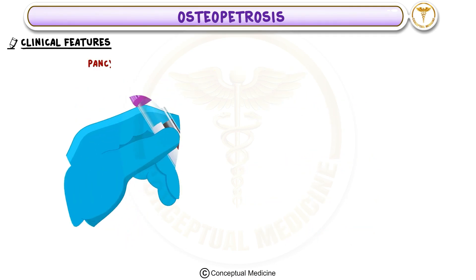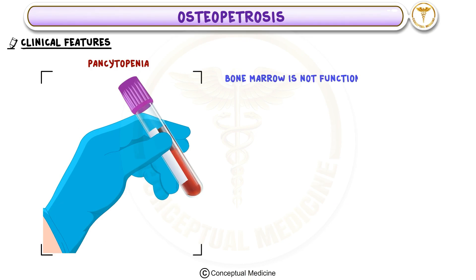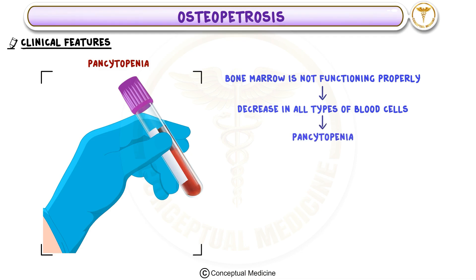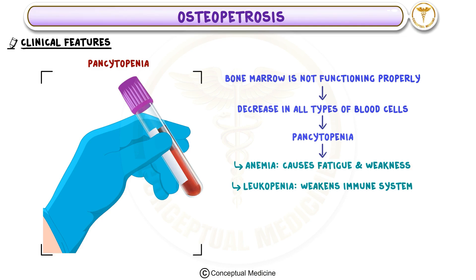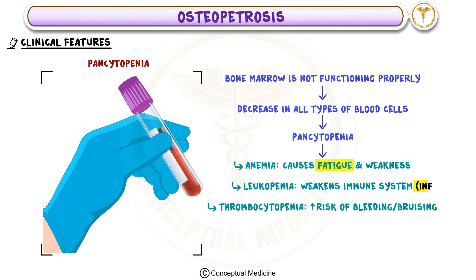Clinical Feature 2: Pancytopenia. Because the bone marrow is not functioning properly, there is a decrease in all types of blood cells — a condition known as pancytopenia. This leads to anemia: low red blood cells cause fatigue and weakness. Leukopenia, or low white blood cells, weakens the immune system, making infections more likely. Thrombocytopenia, or low platelets, increases the risk of bleeding and bruising. So patients with osteopetrosis may experience fatigue, frequent infections, and bleeding tendencies due to pancytopenia.